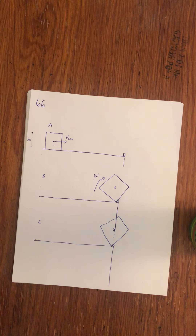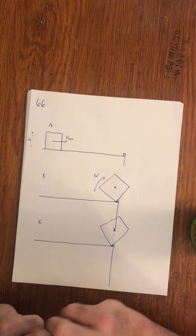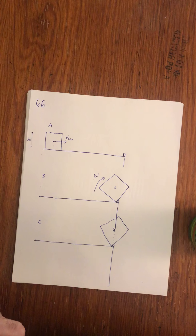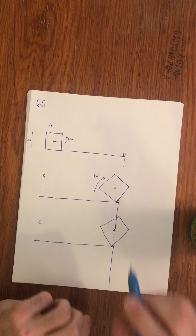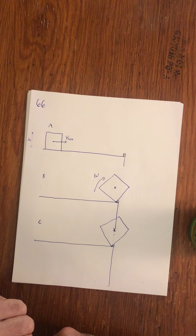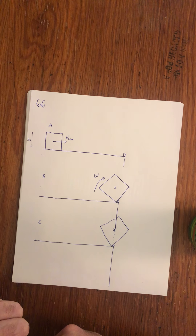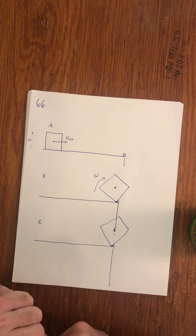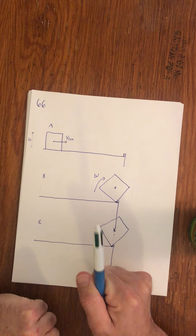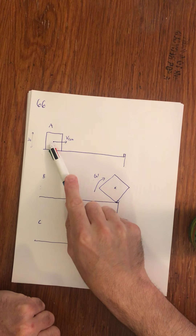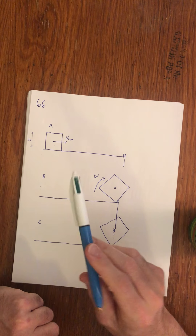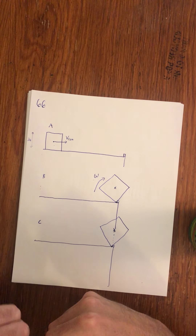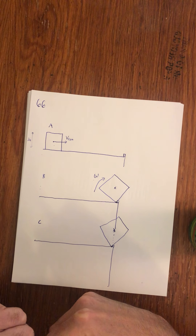What's happening from A to B and then B to C? From A to B is a conservation of angular momentum problem. I have a linear object that ends up going into rotational motion — that always screams to me: think about conservation of angular momentum.